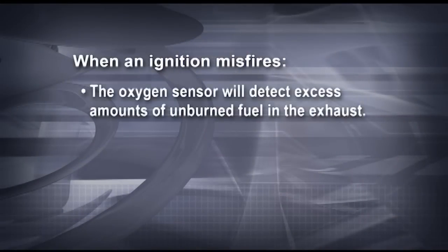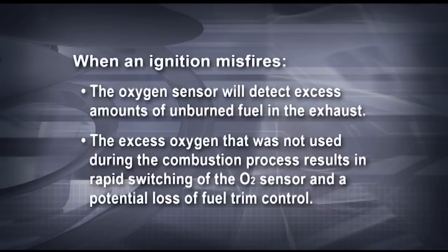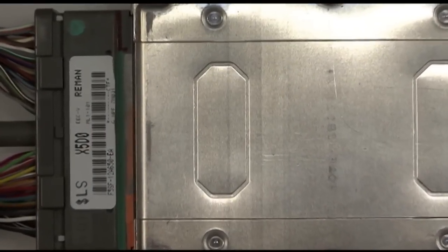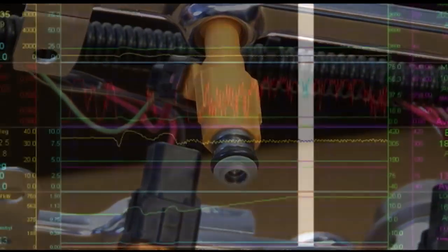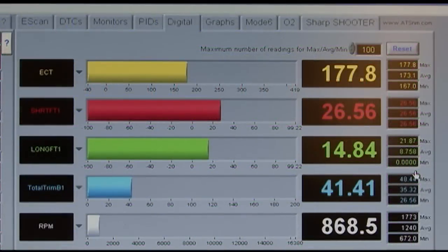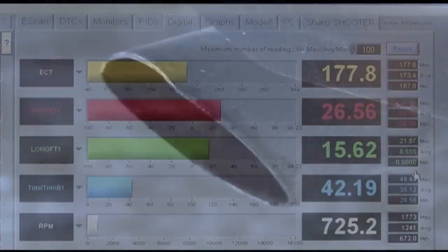The oxygen sensor will detect excess amounts of unburned fuel in the exhaust. The excess oxygen that was not used during the combustion process results in rapid switching of the O2 sensor and a potential loss of fuel trim control. In the past, it was sometimes assumed that this sequence of events would cause the powertrain control module, or PCM, to increase the fuel injector pulse, leading to even more fuel releasing into the exhaust because the PCM determined the system was running lean. In fact, what happens isn't consistent from one firing event to another, let alone from one car to the next.